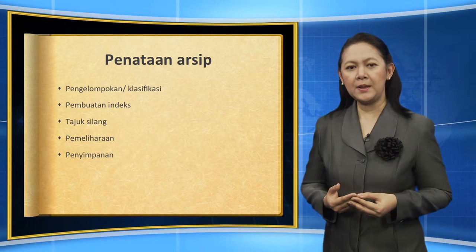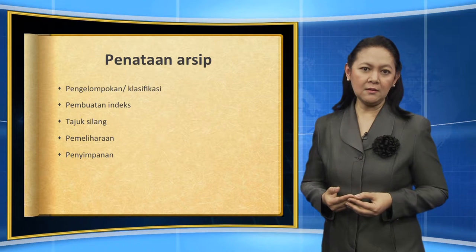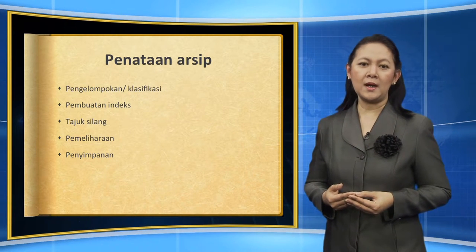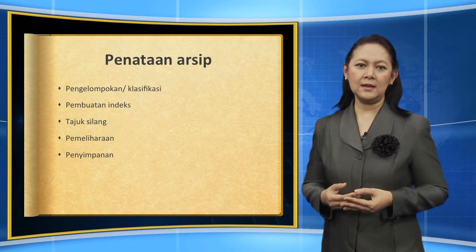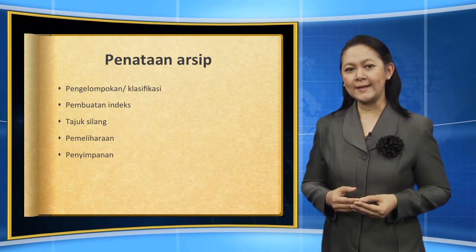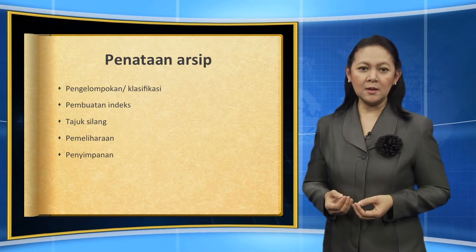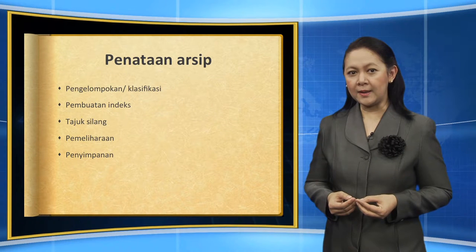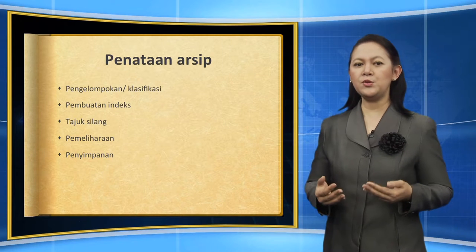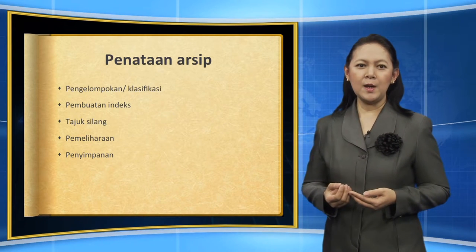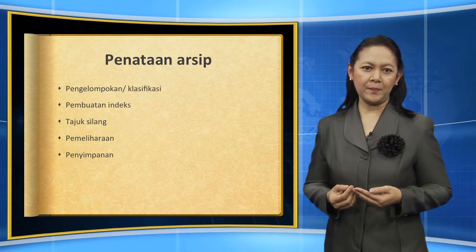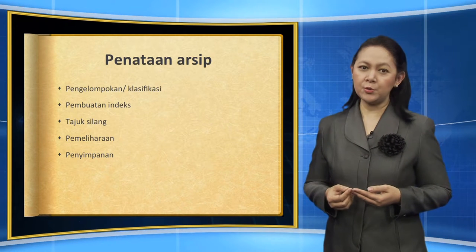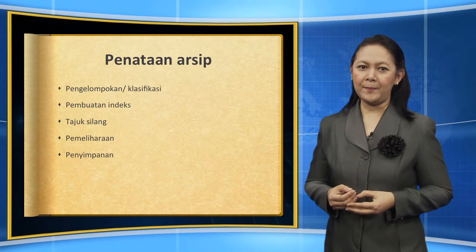Pengelompokan arsip tersendiri dapat kita lihat dari sisi pentingnya — atau sangat penting, atau bermanfaat, ataupun kadar yang cukup penting. Klasifikasi bisa kita lihat dari penumeran yang sudah diberikan; ada beberapa penumeran dalam kelompok kajian dari arsip itu sendiri. Dan setelah itu, pembuatan indeks. Kata-kata indeks dibuat untuk memudahkan menelusur dari arsip itu sendiri. Indeks biasanya diawali dengan huruf ataupun kata alfabet yang ada. Kemudian, tajuk silang adalah istilah yang merujuk dari satu istilah kepada istilah lainnya.